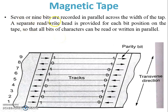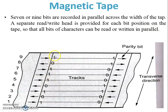7 or 9 bits are recorded in parallel across the width of the tape. A separate read/write head is provided for each bit position, so there are 7 or 9 heads available to read or write each bit, so that all bits of a character can be read or written in parallel form.